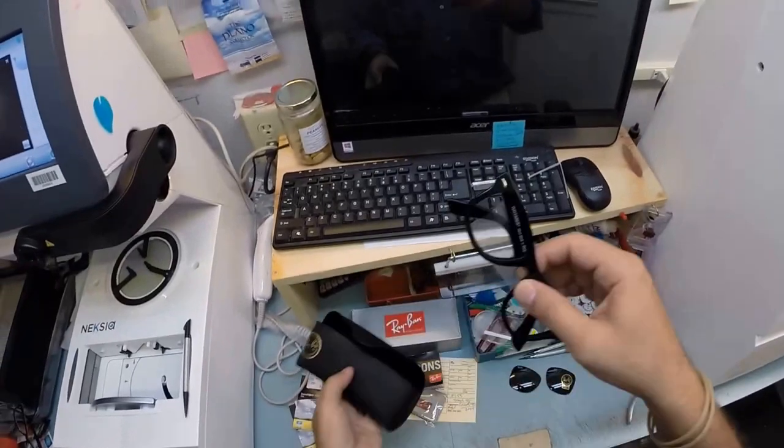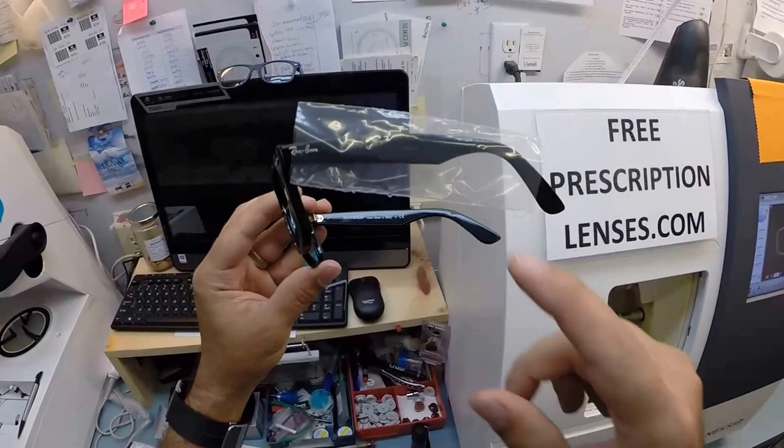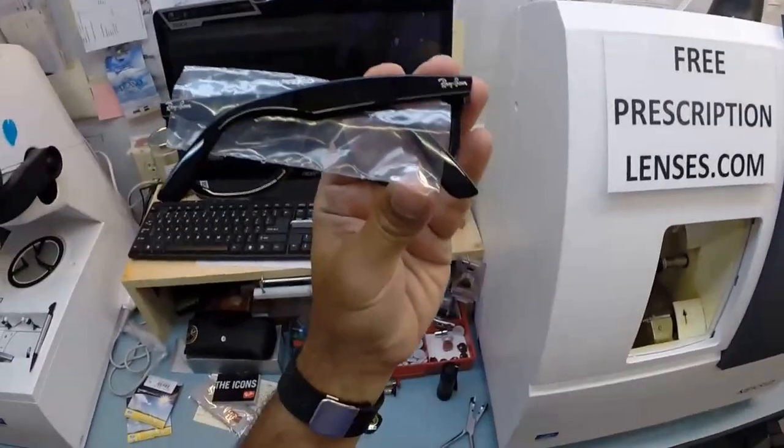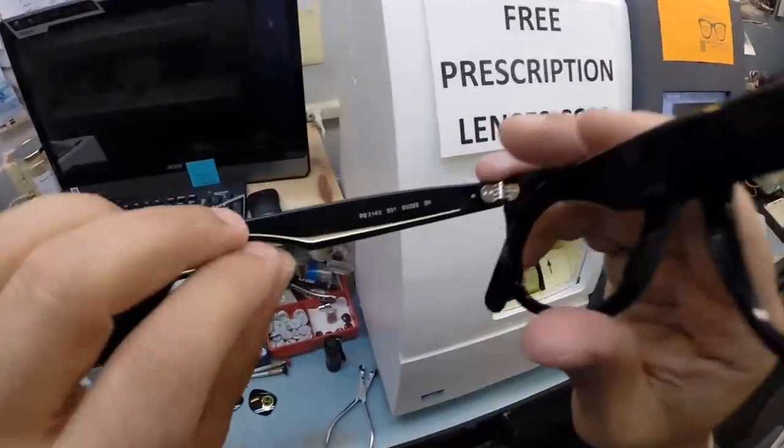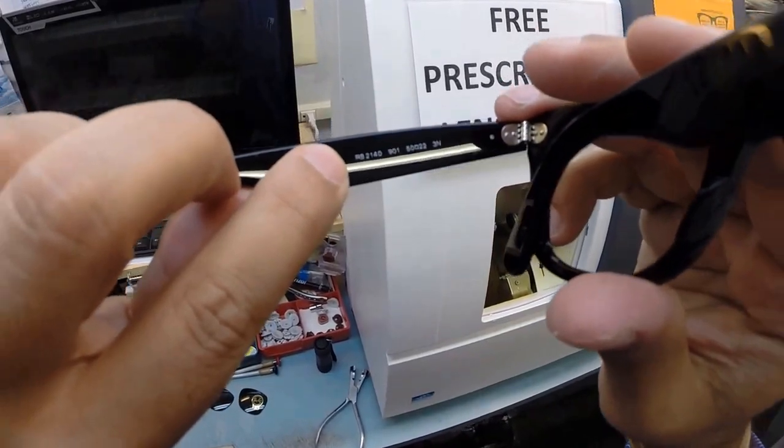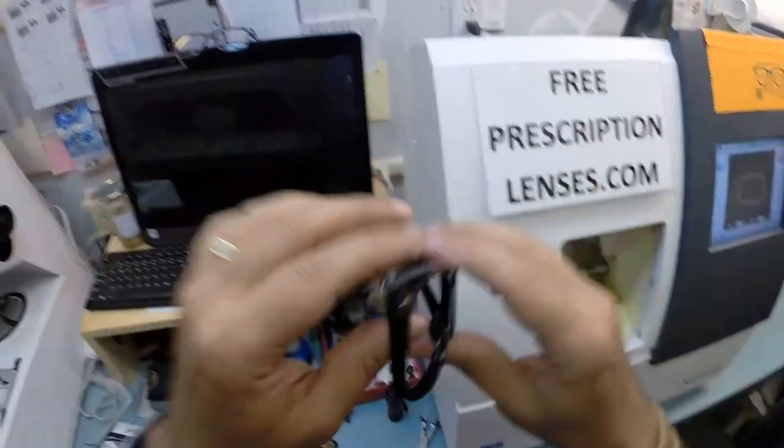And of course, the star of the show, the Ray-Ban Original Wayfarer. It comes with a plastic sleeve on the left temple. This is the Ray-Ban 2140, color 901, which is the classic shiny black in the 50 eye size.